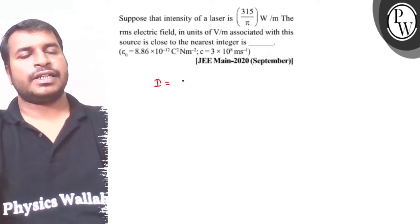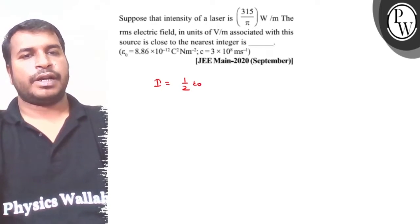If you look at the intensity, that is, 1 by 2, epsilon naught, e naught square into c.